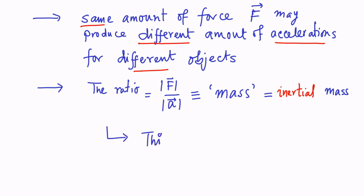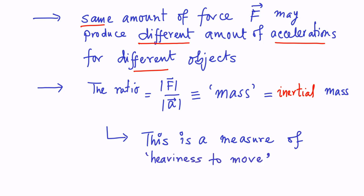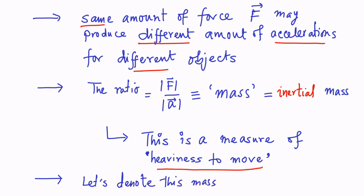Clearly, inertial mass is a measure of heaviness to move. In other words, if you are given a bigger object, the same amount of force will produce less acceleration. Let us denote the inertial mass of an object as m superscript i.